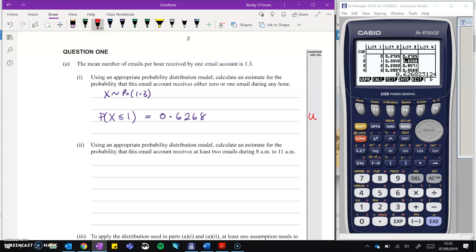Okay, part two. Using an appropriate probability distribution model, calculate an estimate for the probability that the account receives at least two emails from 8 to 11. So we now have a new lambda of 3.9 because 8 to 11 is three hours, and we want to work out the probability that we get at least 2. So X is greater than or equal to 2. Remember, our calculator can only do cumulative up to and including a number. So we'll need to do 1 minus the probability that X is less than or equal to 1, which is pretty handy because that's what we... Oh, no, wait. We didn't work that out in the first one because we had a different lambda. So we need to do 1 minus the probability that X is less than or equal to 1 when lambda is 3.9.